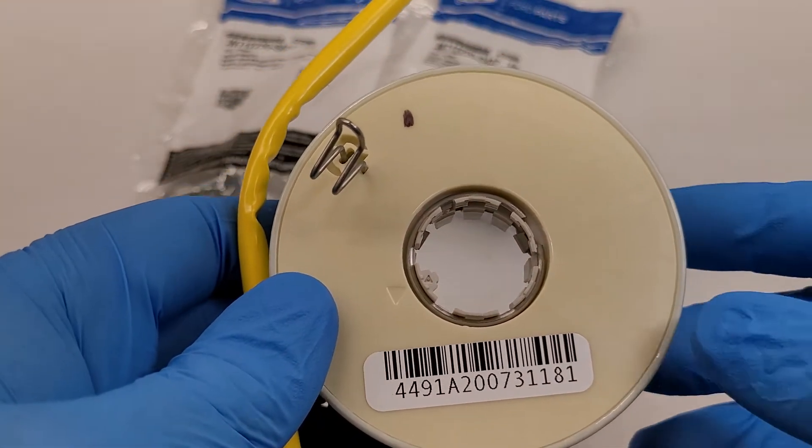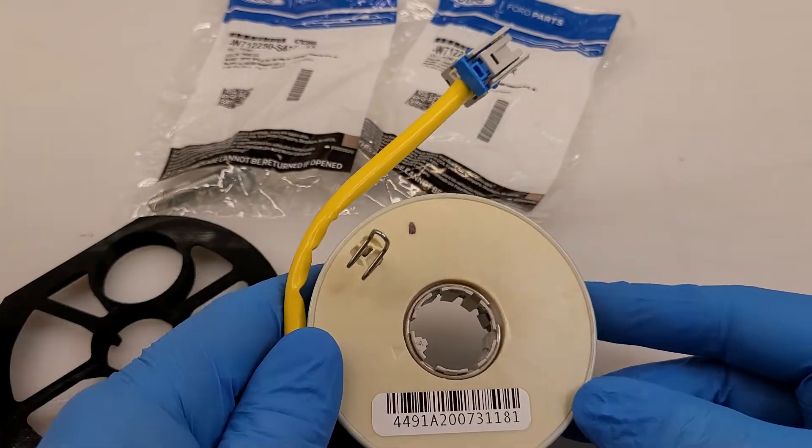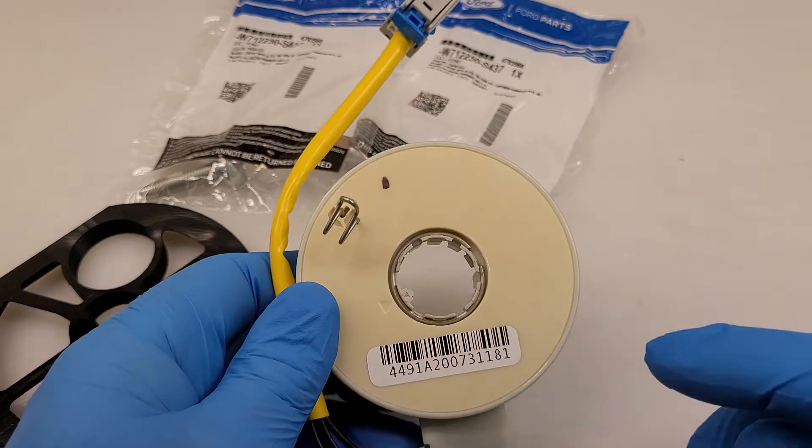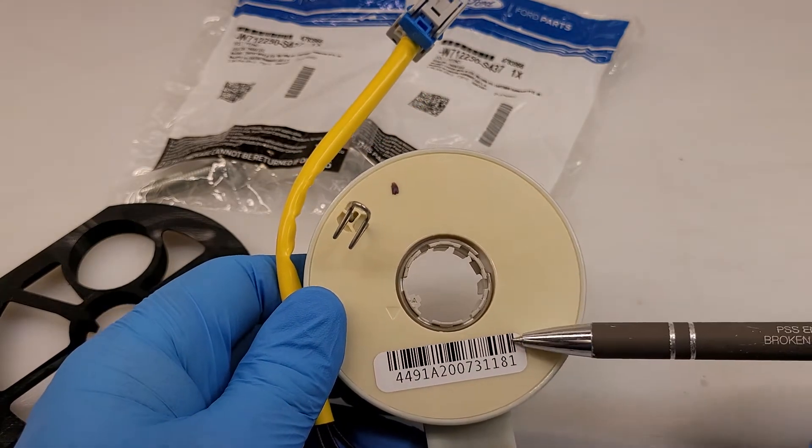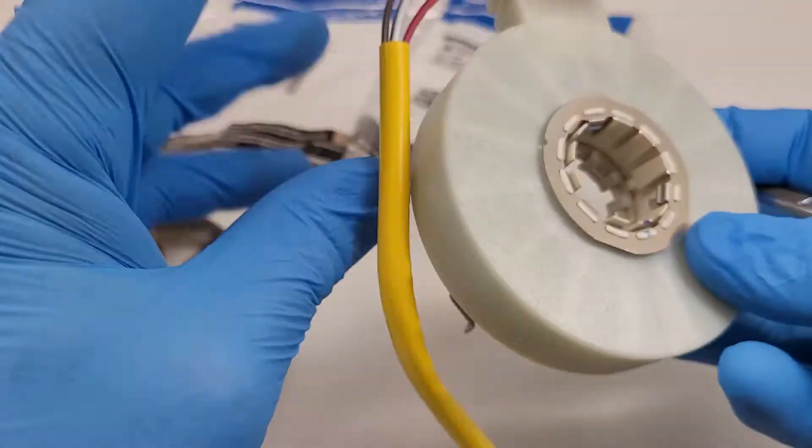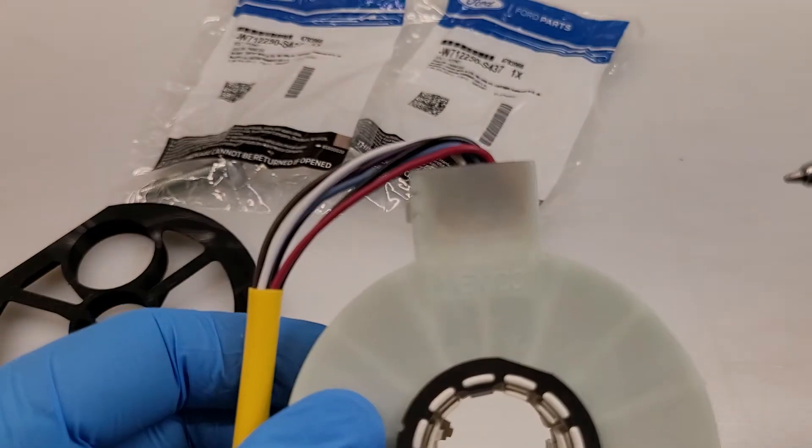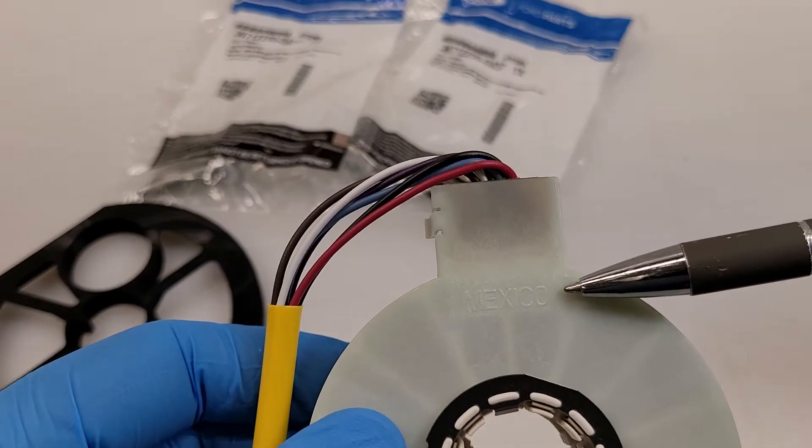These sensors are original equipment manufacturer. They're made by the same company that makes them for Ford. We can tell that right here by a serial number. All these sensors have serial numbers on them and if we flip it over, if it'll focus, we can see these are made in Mexico.